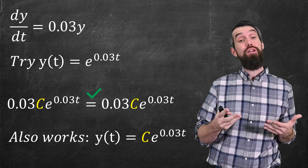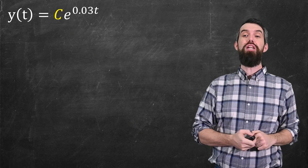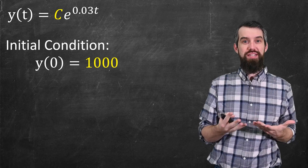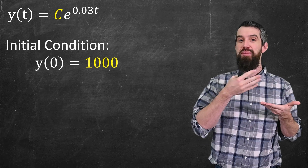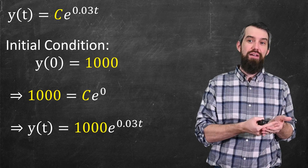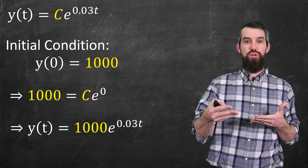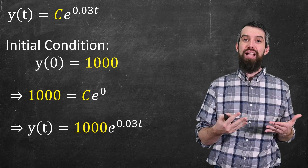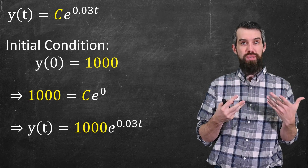So how do you find the value of c? You need a little more information — an initial condition. An initial condition tells you how much quantity there was at time t equal to 0. I'll say I started with a thousand dollars at t equal to 0. Plugging t equal to 0 into the equation gives a thousand on the left equals c times e to the 0, and since e to the 0 is 1, that tells me c equals a thousand. So my solution is y of t equals 1000 times e to the 0.03t.